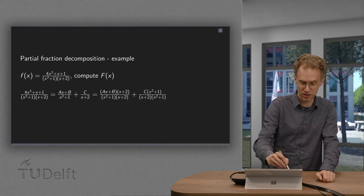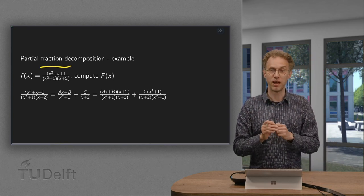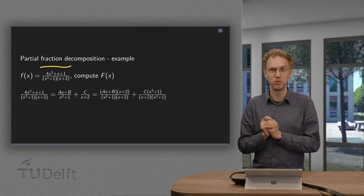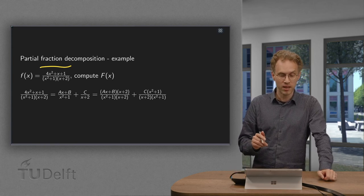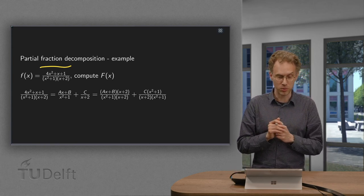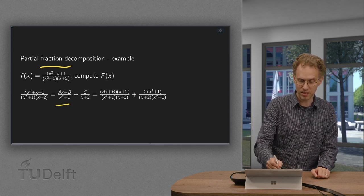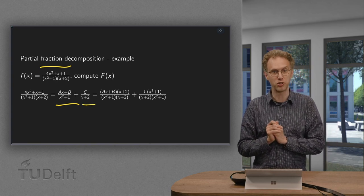So here we have our f, looks a bit more complicated. We want to find the antiderivative and we have already factorized the denominator. You need to be able to do so otherwise we are lost. Now we want to decompose this fraction as something divided by x squared plus 1 plus something else divided by x plus 2.